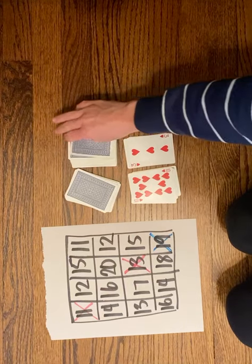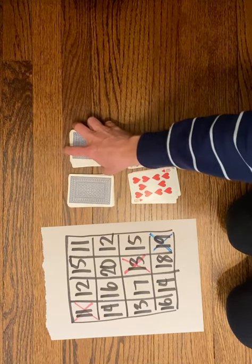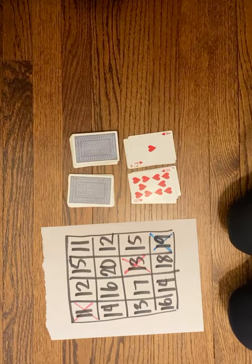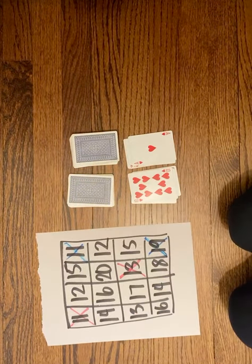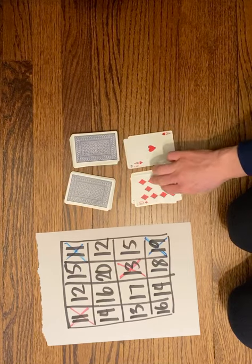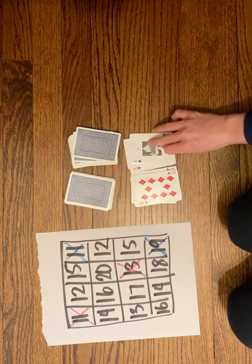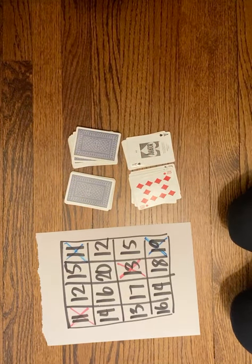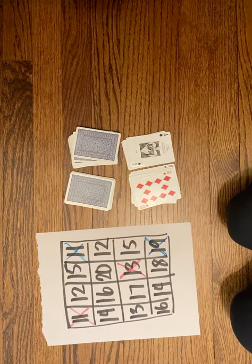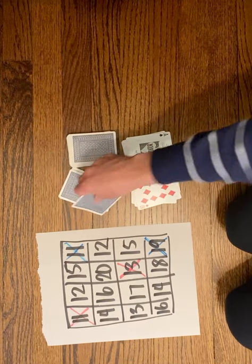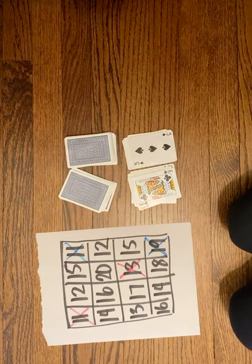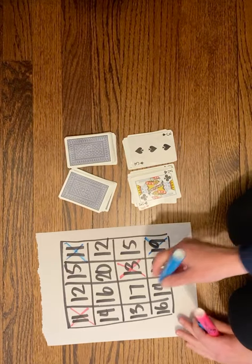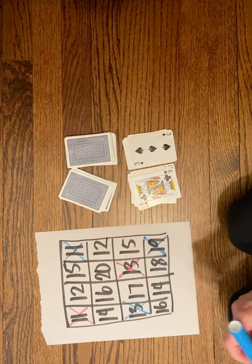Now it's blue's turn. 10 plus 1, because my ace is worth 1, is 11. There's only one 11 on the board, so blue has to take that one. Pink has 10 plus 1 again. If pink sees any 11s... uh-oh, there are no 11s left, so pink skips that turn. Now it's blue's turn: 10 plus 3 is 13. There's a 13 here that blue can take.